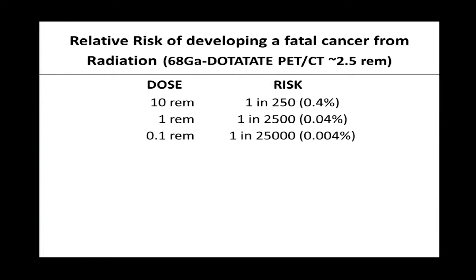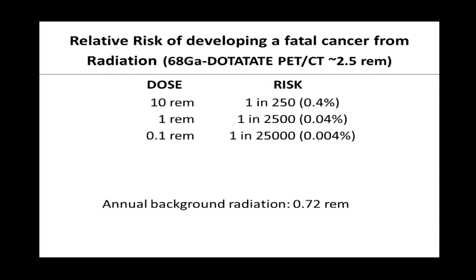To put this in perspective: just by living on earth, we're exposed to radiation. In the U.S., the annual background radiation is 0.72 rem, coming from outer space, radioactive materials in the ground, and medical imaging. Our bodies have evolved mechanisms to repair damage caused by radiation through DNA repair mechanisms. So the linear non-threshold model isn't fully appropriate because, from an evolutionary standpoint, we are able to fix damage caused by low-level radiation.